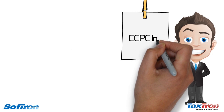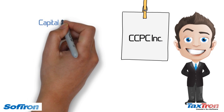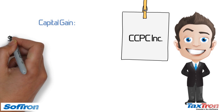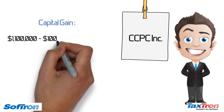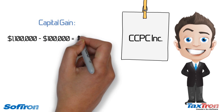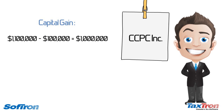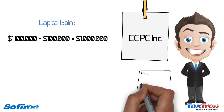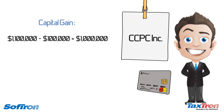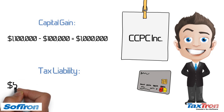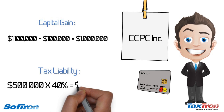Now in the second scenario, Charles owns CCPC, Inc. CCPC, Inc. bought real property for $100,000 in 2001 and sold it for $1.1 million last year, thereby generating a capital gain of $1 million. Charles wants to cash out this money. The taxable capital gain for CCPC, Inc. will be $500,000, just like the first scenario.